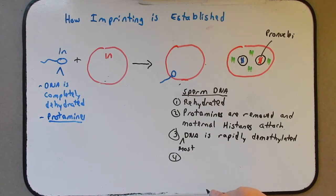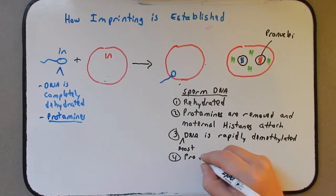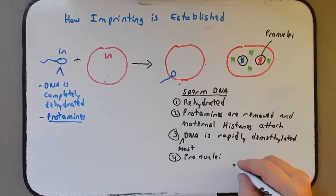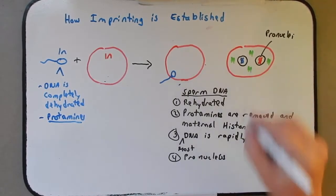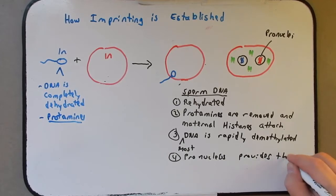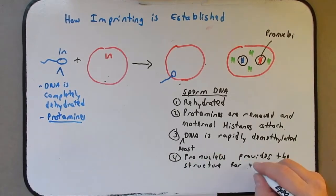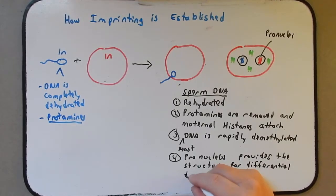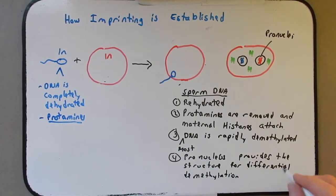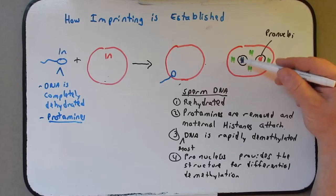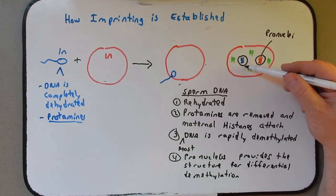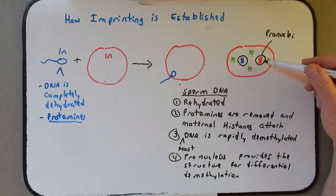But we'll come back to that in just a moment. And though I hinted at it, I didn't specifically say it, so let's say it right now. This pronuclei, or pronucleus, where this is occurring for the sperm DNA, provides the structure for differential demethylation. The reason I say differential, it's not differential within the sperm pronuclei. But it's different, the pattern of demethylation is different between the sperm DNA and the oocyte DNA.